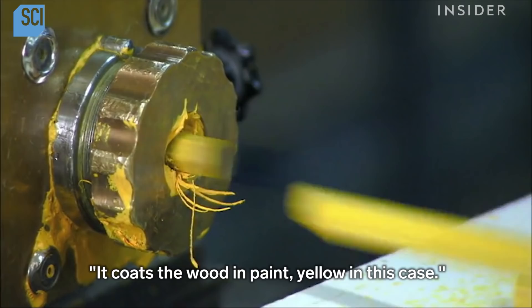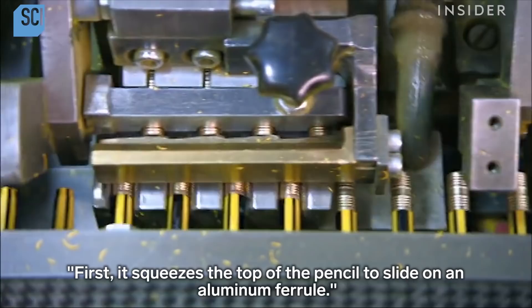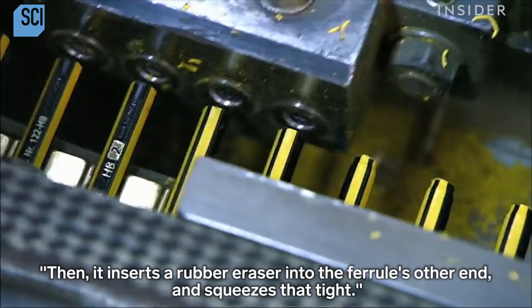Last stop, the rubber tip assembly machine. First, it squeezes the top of the pencil to slide on an aluminum ferrule. Then it inserts a rubber eraser into the ferrule's other end and squeezes that tight.